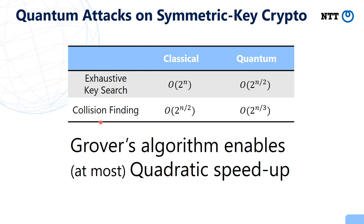Similarly, collision attacks can be sped up from 2 to the power N over 2 in the classical setting to 2 to the power N over 3 in the quantum setting. So we can obtain some quantum speed-up by using Grover's search. However, the speed-up by Grover's search is always at most quadratic, so it had been considered that the impact of quantum computers on symmetric key cryptanalysis would not be so significant.